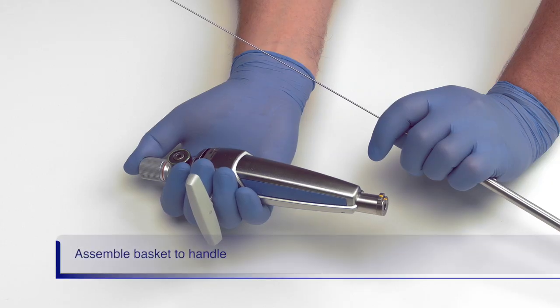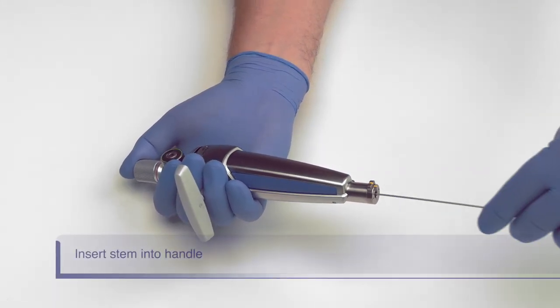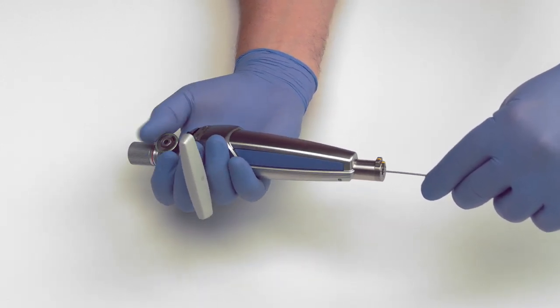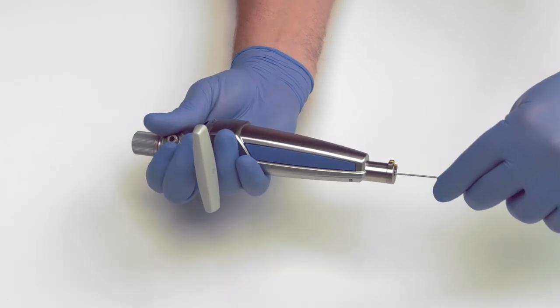Next, we will assemble the basket to the handle. First, insert the stem into the handle until you feel or hear a click. Lock the stem in place by fully turning the knob on the release button clockwise.